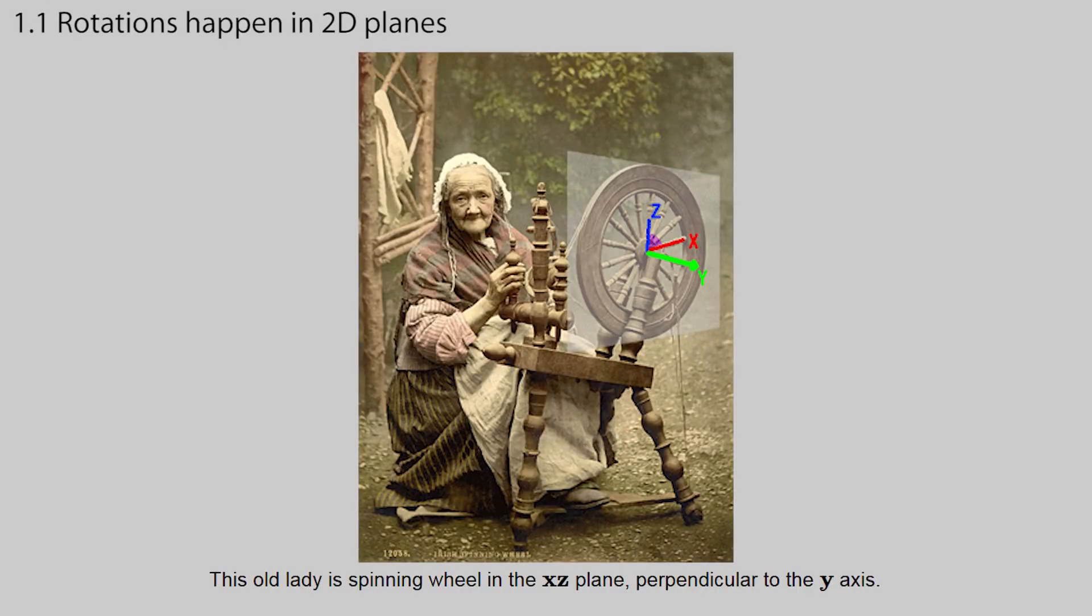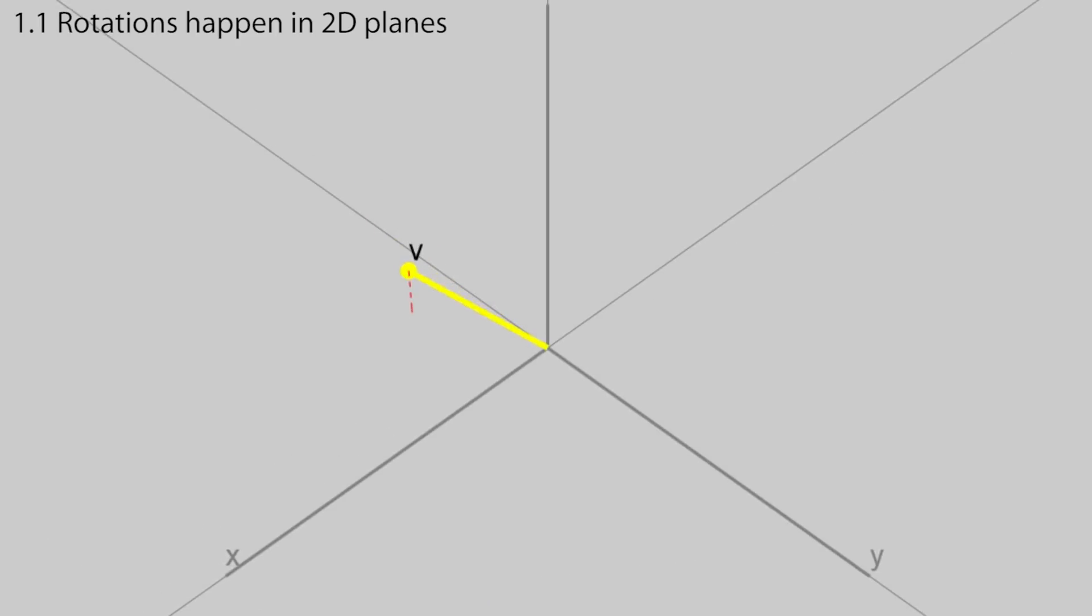In 3D, we usually think of rotations as happening around an axis, like a wheel turning around its axle. But instead of thinking about the axle, a more correct way is to think about the plane that the wheel lies on perpendicular to the axle. This is because if we split a vector into two pieces, one lying inside the plane and one lying outside the plane, the rotation rotates the inside part while keeping the outside part the same.